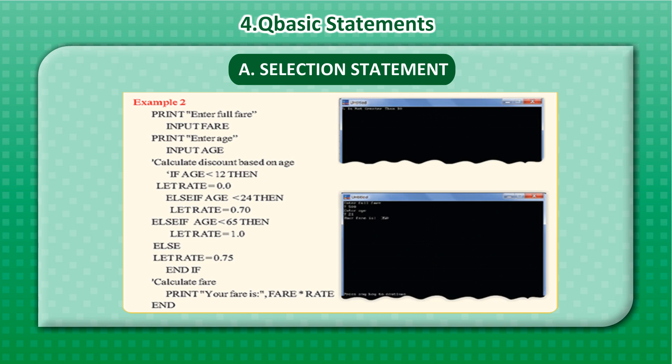Calculate discount based on age. If age is less than 12, then let rate equal 0.0. Else if age is less than 24, then let rate equal 0.70. Else if age is less than 65, then let rate equal 1.0. Else let rate equal 0.75. End if.